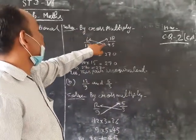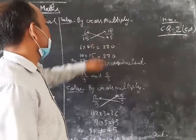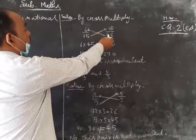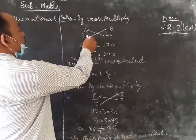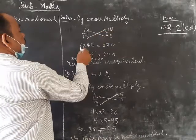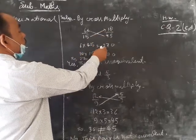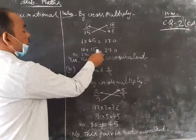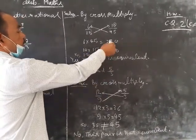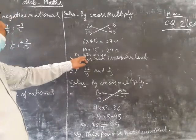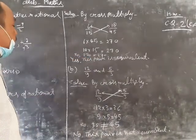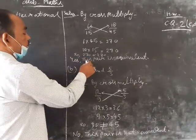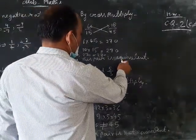6 upon 50 cross 15 upon 45. 6 multiplied by 45 equal to 270. And 18 multiplied by 15 equal to 270. Both products are equal. So, 270 equal to 270. So in this case, this pair is equivalent.